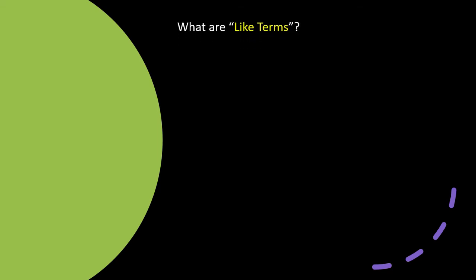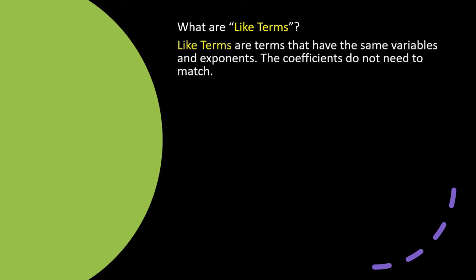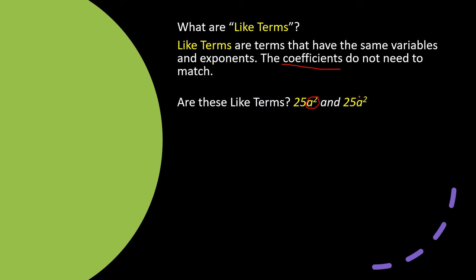Another thing you're going to be asked on your GED exam is to identify like terms. Like terms in algebra are terms that have the same variables and the same exponents. The coefficients do not need to match or be the same. For example, here I have a variable 'a' with a square exponent, and this other term also has 'a' squared — so yes, these two terms are like terms, even though the coefficients differ.